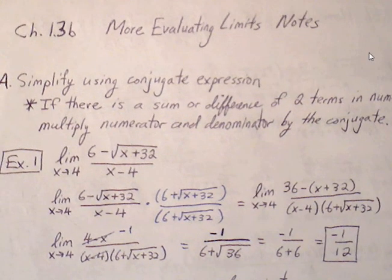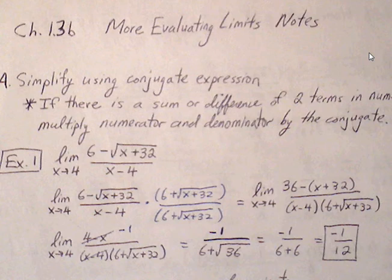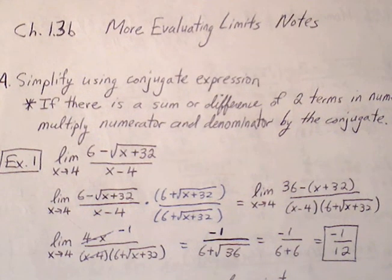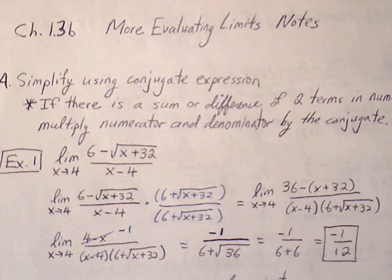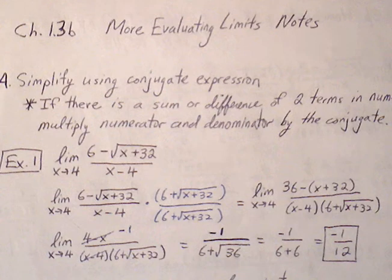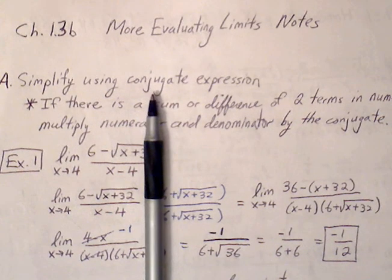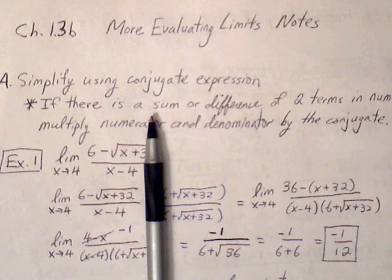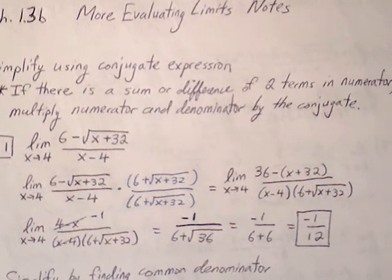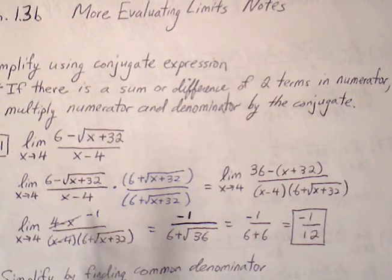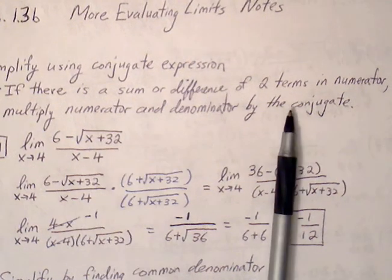Here we're going to finish up on chapter 1.3 and look at some other examples of evaluating limits algebraically. Sometimes we're going to see specific cases where we have conjugate expressions. If there is a sum or difference of two terms in the numerator, then we can multiply the numerator and denominator by that conjugate.